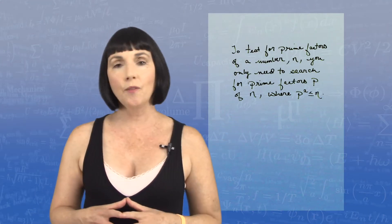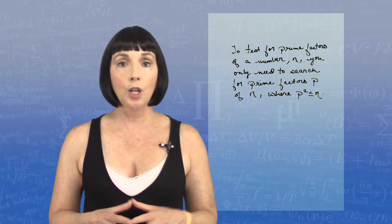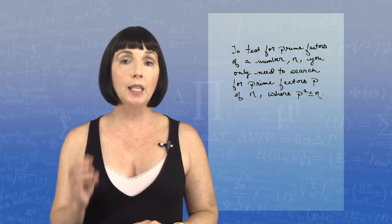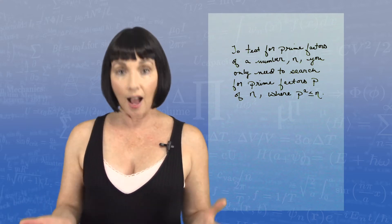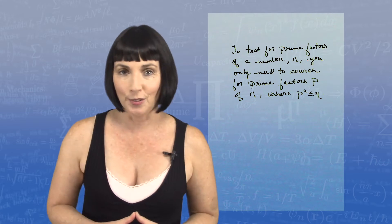To test for prime factors of a number n, you only need to search for prime factors p of n where p squared is less than or equal to n. Got it? Makes perfect sense, right?